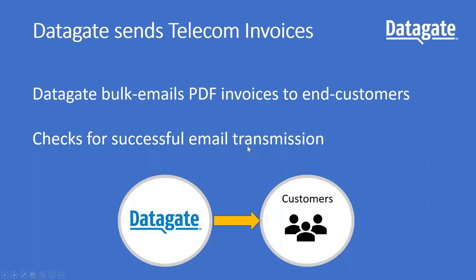DataGate will send your telecom invoices to your customers as a PDF attached to an email, and you have full control over that process — how the email looks and how the invoice looks. The invoice is completely customizable with your logo, and it displays data on the invoice as per how you want to display it. We give you fair flexibility there. We also check when emailing those invoices that the email has been successfully received by your customer. If it doesn't go through, it'll come back with a red warning that you'll see in our user interface.